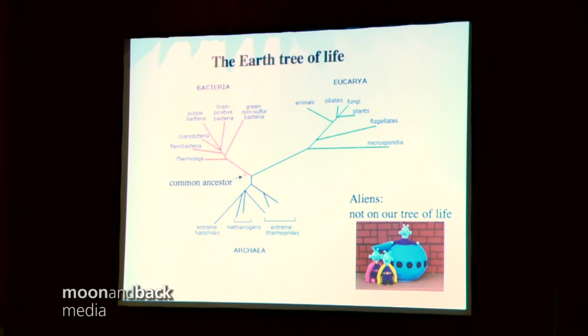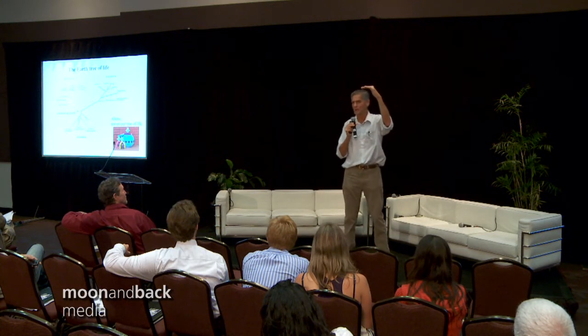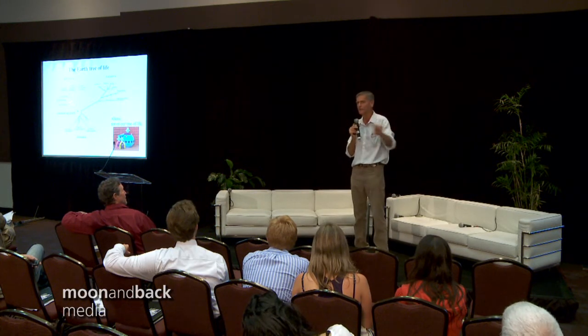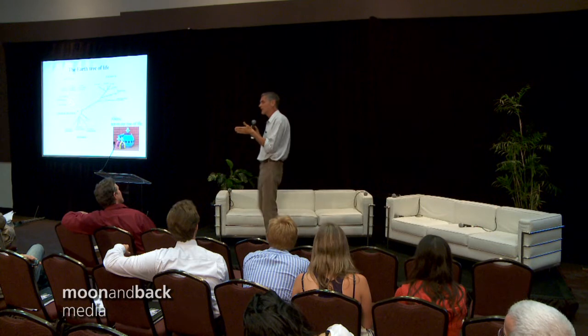You could have three books — English, Spanish, and Chinese — and they all could be books on how to build a chair. At the very bottom level, the books are made out of paper. At the very top level, the books describe how to make a chair. It's the intermediate level where the books differ dramatically. And that's the problem we anticipate finding in other life.